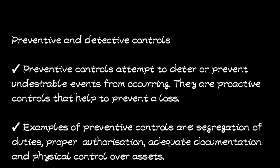Preventive controls are put in place to prevent a loss or to stop something bad from occurring. They prevent undesirable events from occurring. Examples of preventive controls include segregation of duties to prevent fraud, proper authorization, adequate documentation, and physical control over assets to prevent theft and loss.